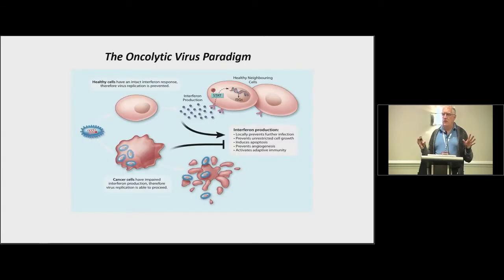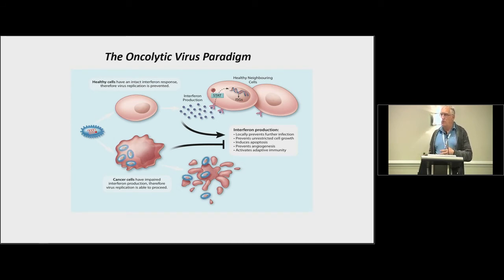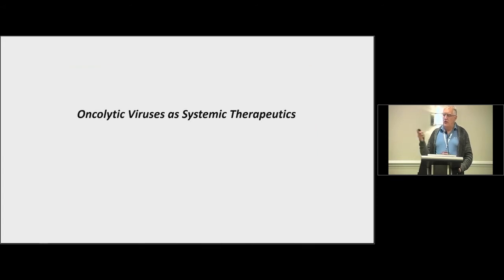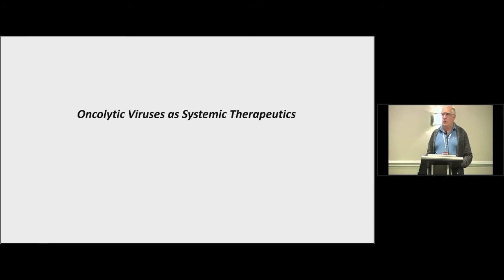This has led to the oncolytic virus paradigm: when a virus enters a normal cell, it turns on the antiviral response including interferon production. The virus may start an infection in that first cell, but it will be shut down. Whereas when it enters a cancer cell that cannot respond to or produce interferon, that virus is able to replicate and spread throughout the tumor. You can use oncolytic viruses as local-regional therapies hoping to generate a systemic immune response, but also as systemic therapeutics themselves, hopefully infecting each tumor within the body.